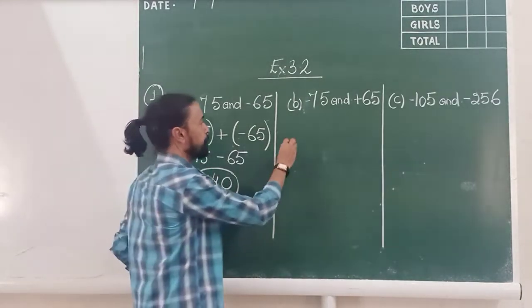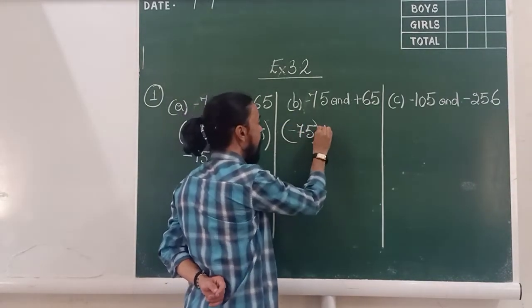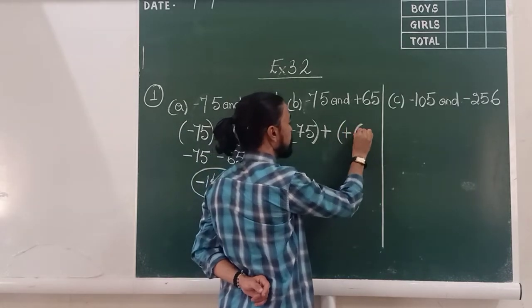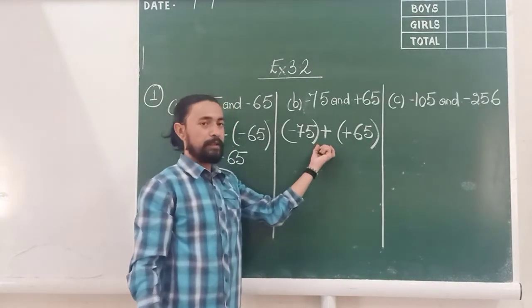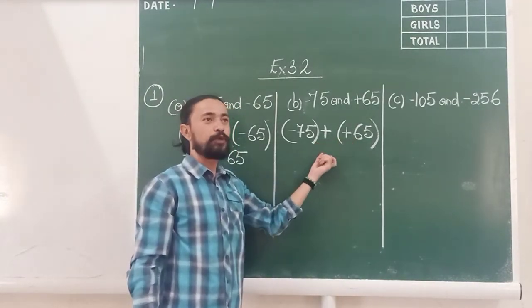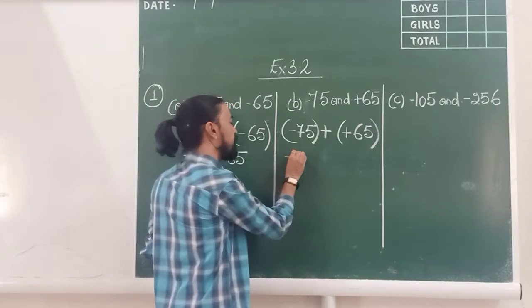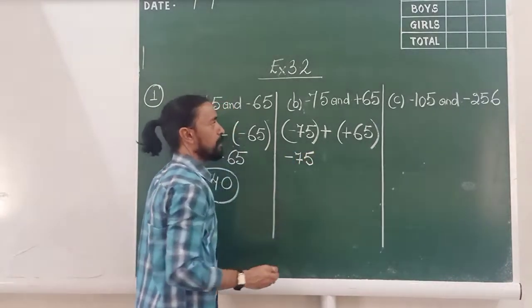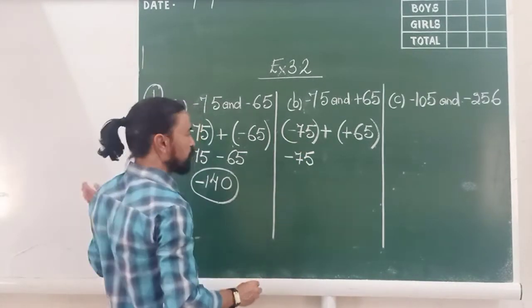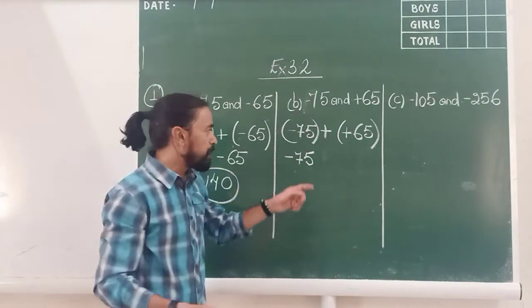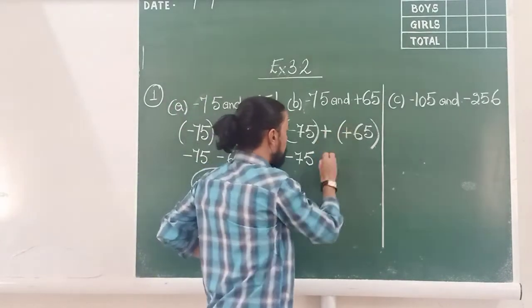Let's go to part B. So again, I have minus seventy-five in brackets added to plus sixty-five. Here, plus no doubt is the operation, addition. But it multiplies with the sign to help me to remove this bracket. Remember that. This minus seventy-five, the first bracket comes out as it is. Always. The first bracket comes out as it is. No changes.